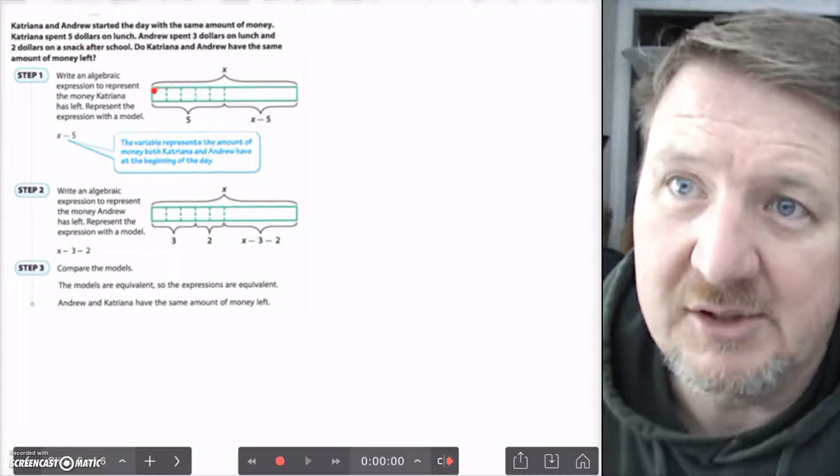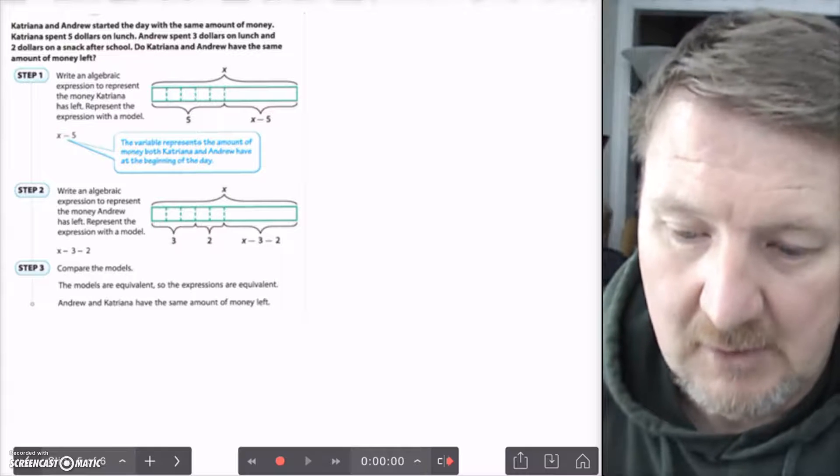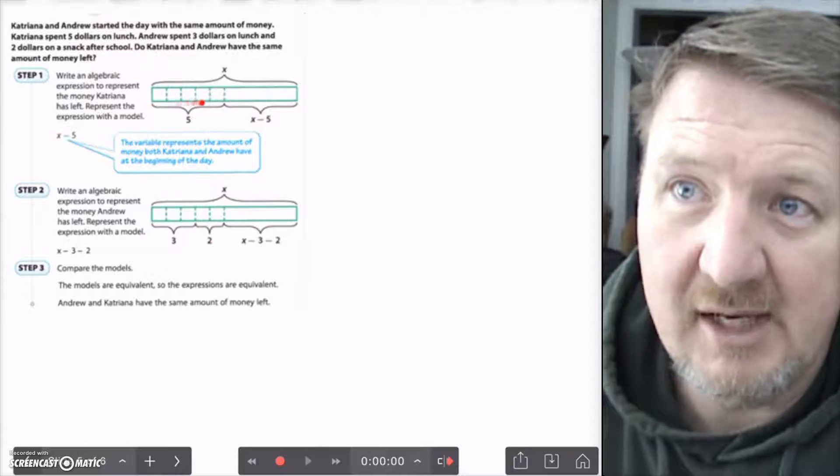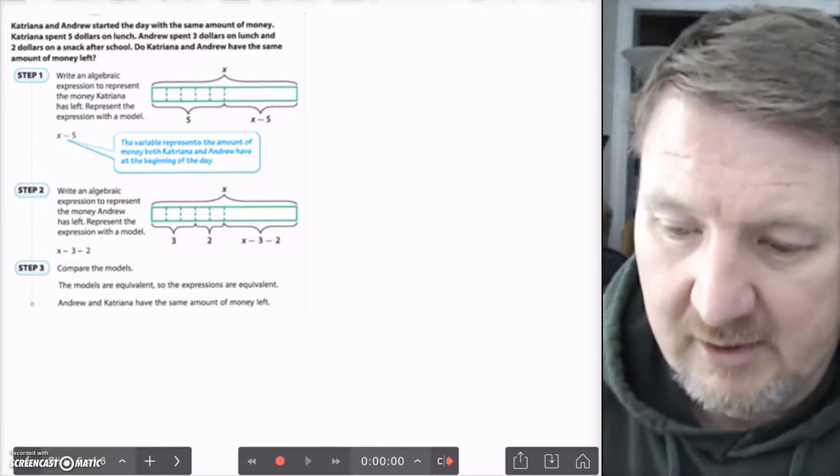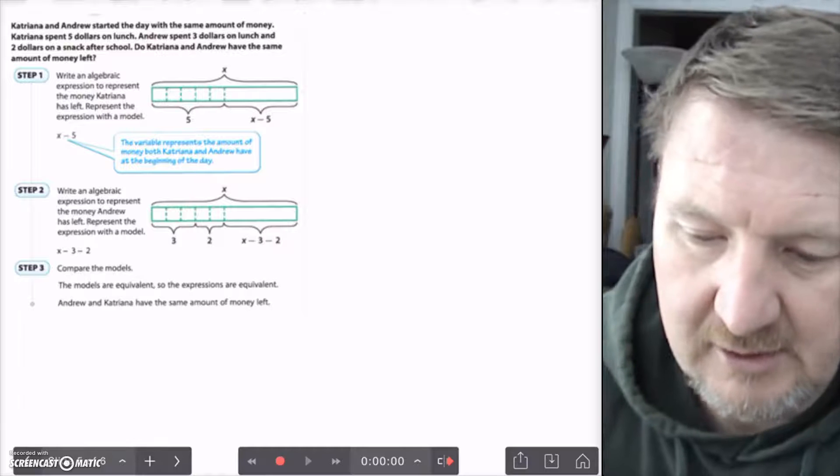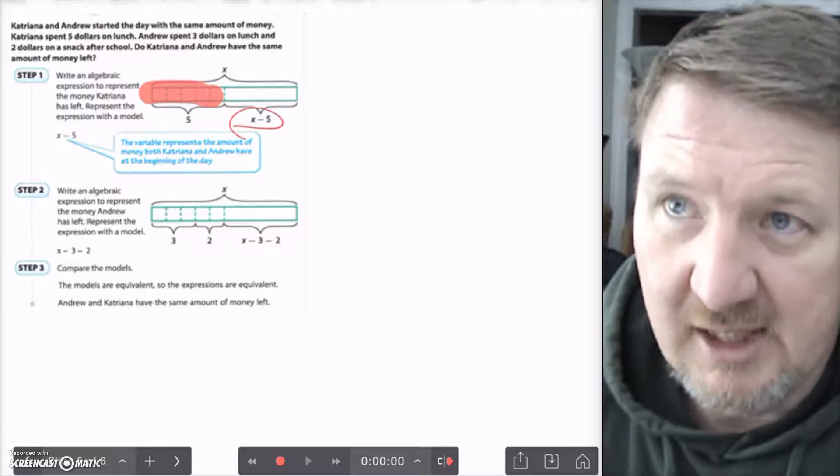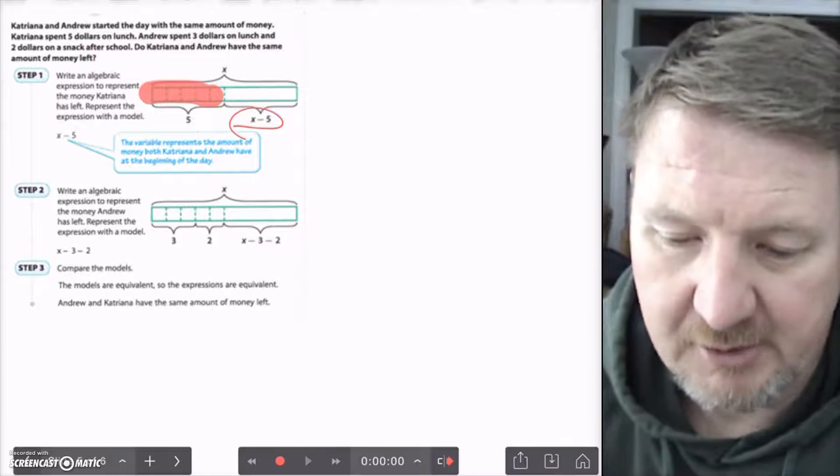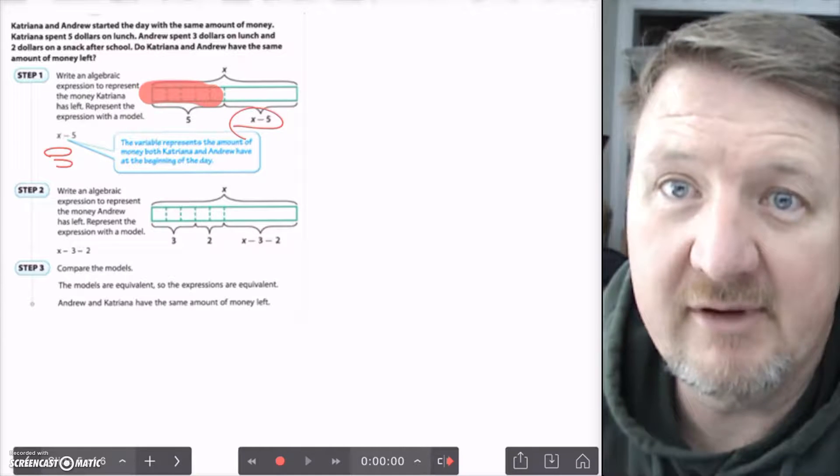It says write an algebraic expression to represent the money that Katrina has left. Represent with a model. So, here's the model. Here's this little bar model. This whole model represents the money she started with, which was x. This is the money she spent. So, we're going to be taking this 5 away. And this value that's left is x minus the 5 that she took away. So, we can say that this part is gone, and then this is what's left, x minus 5.